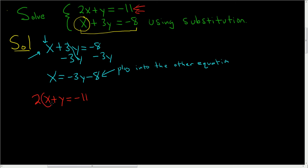And now we're going to replace x with all of this. So this is 2 times x, but x is this. So negative 3y minus 8 plus y, and then equals negative 11.